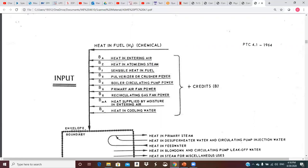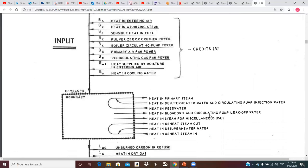B sub X pulverizer or crusher power. Boiler circulating pump power. Primary air fan power. Recirculating gas fan power. Heat supplied by moisture in the entering air. So we're bringing in outside air. It has moisture in it. And that moisture has energy. It's vapor, water vapor. It's coming in. So it's bringing energy into the control volume. And then any heat in the cooling water that's supplied, so cooling parts of the envelope or whatever cooling water we might have.